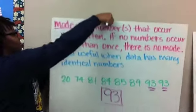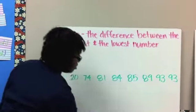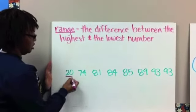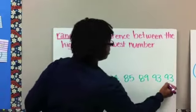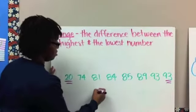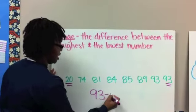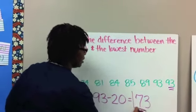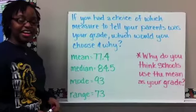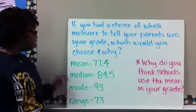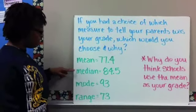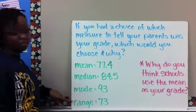All right? And let's move on to range. And range is just the difference between the highest and lowest numbers. So the lowest number in this set of data is 20. The highest is 93. So we're just going to subtract 93 minus 20 to get a range of 73. All right? So for this student's grades, we've got a mean of 77 and 4 tenths, a median of 84 and 5 tenths, a mode of 93, and a range of 73.